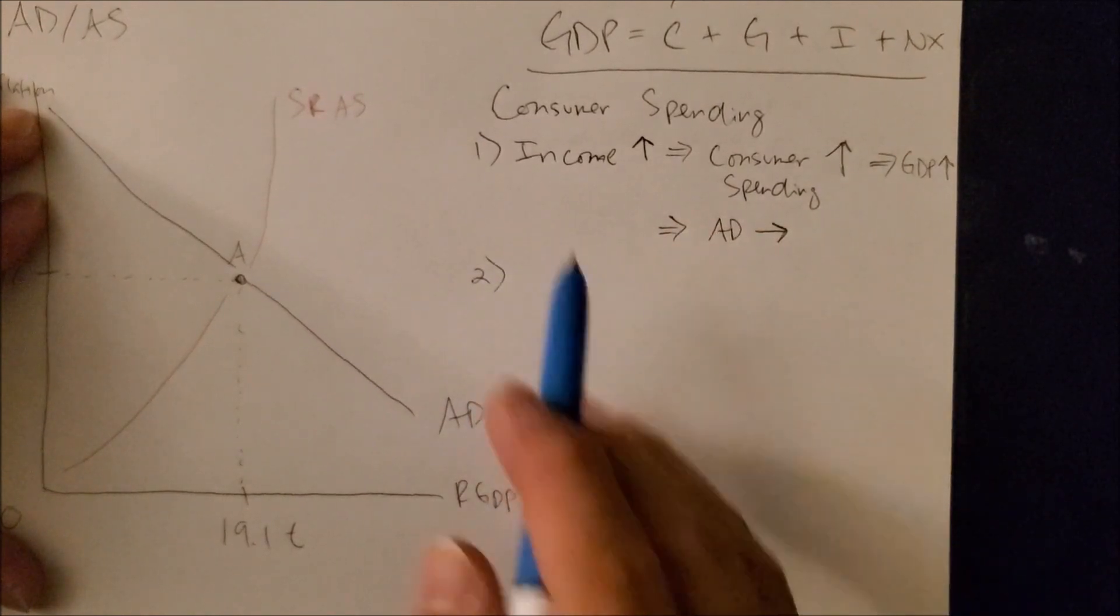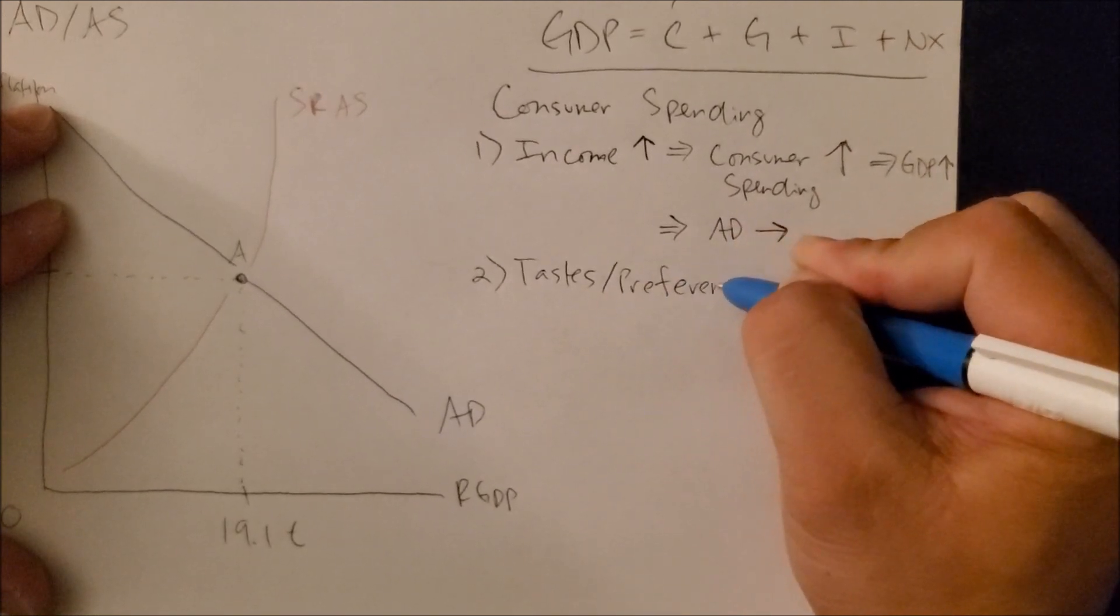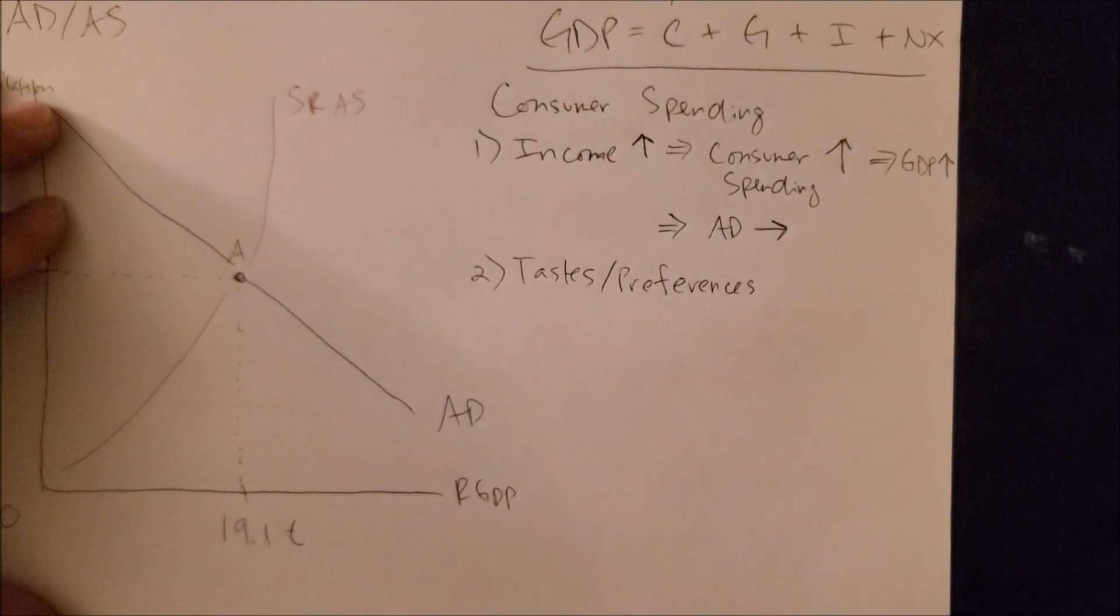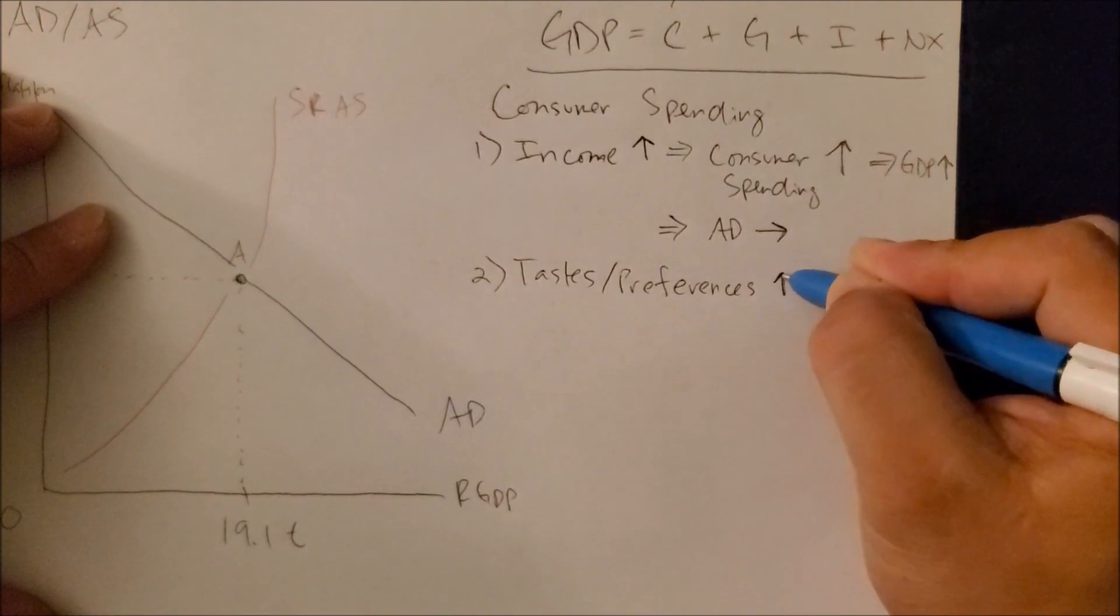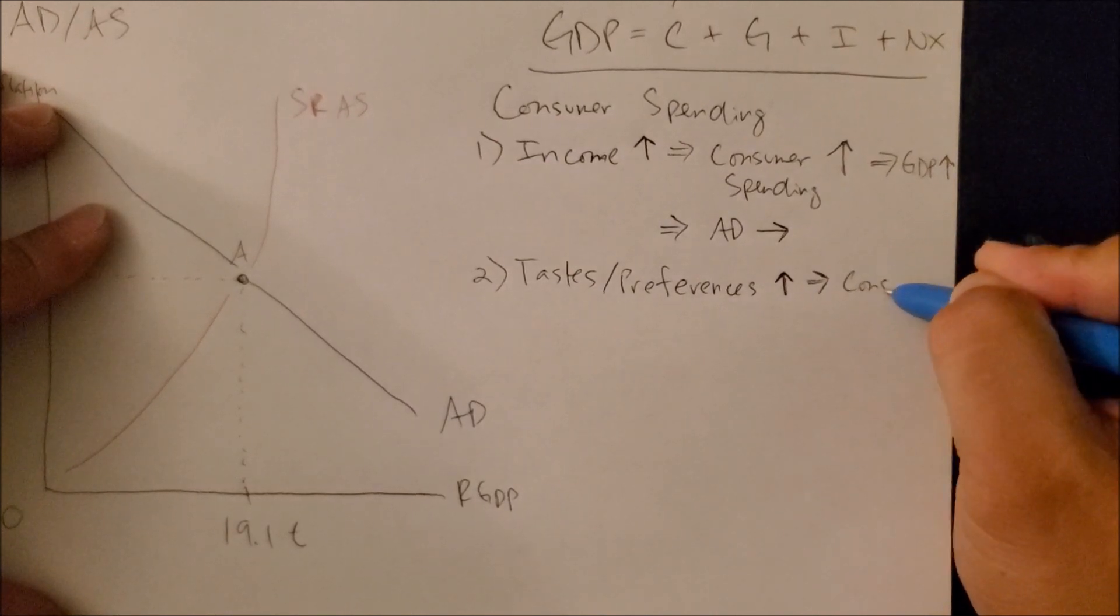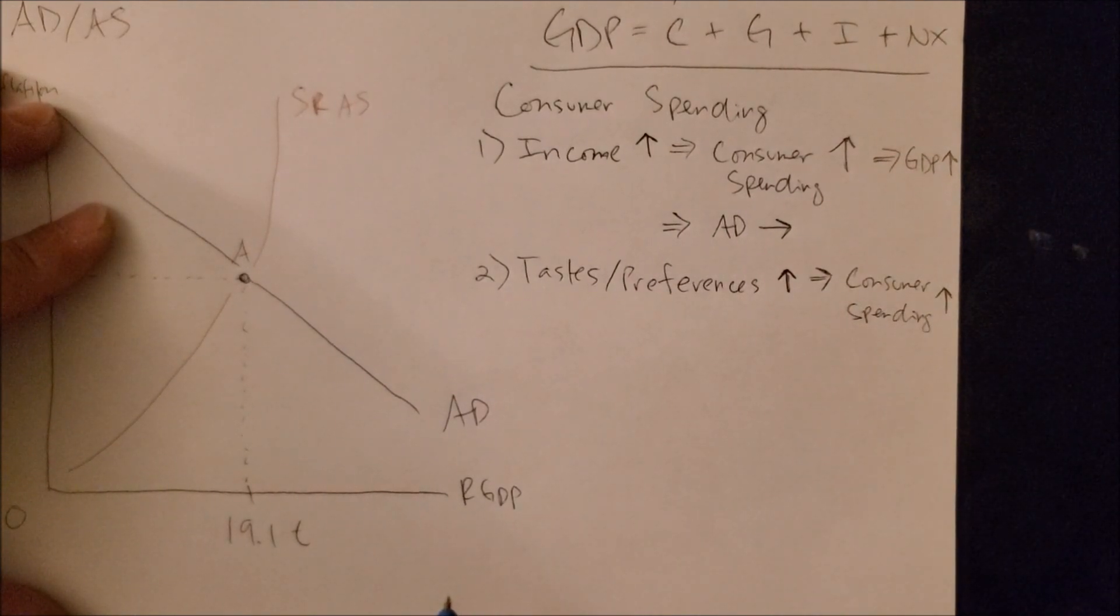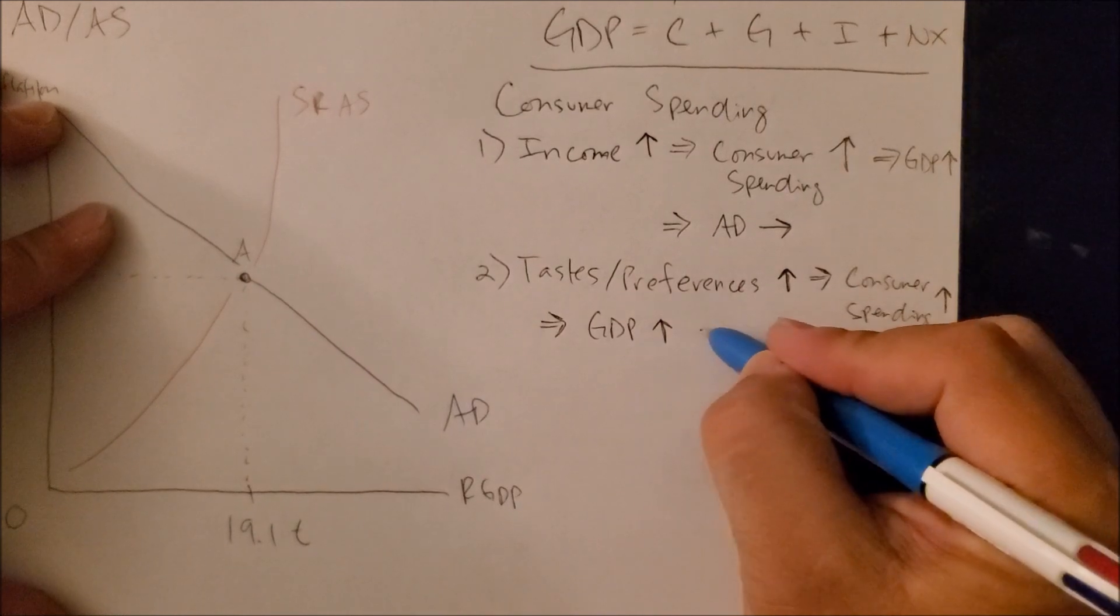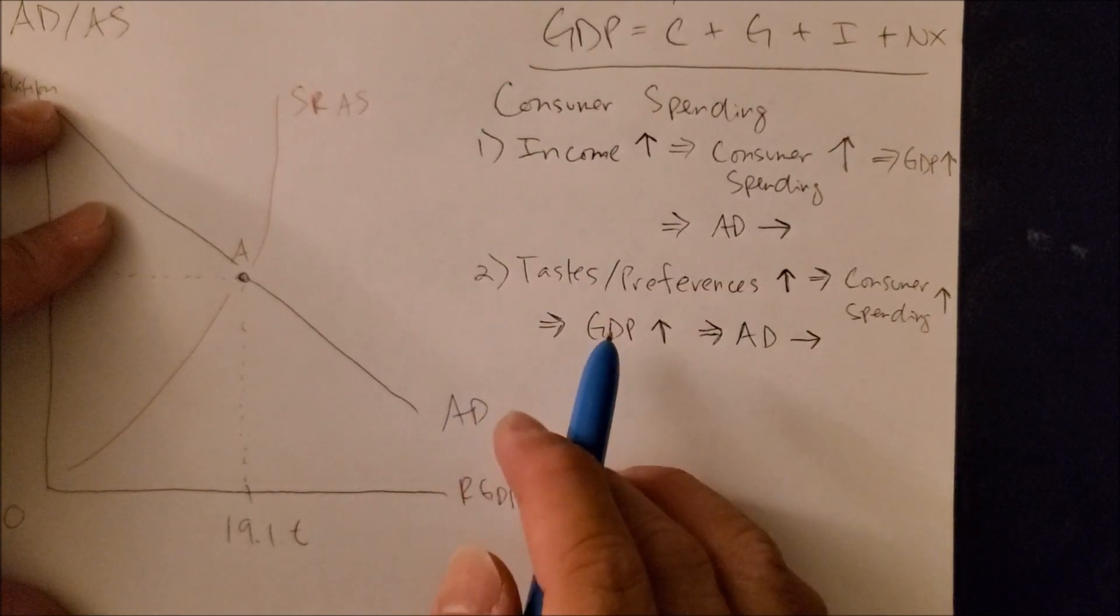A second factor in consumer spending looks at what we like, taste, and what we prefer, our preferences. So when you like something, you're bound to buy it. When you prefer one good over the other, you're more likely to consume that good. So again, when we see consumers' tastes and preferences increase for a certain good, we are going to consume more of that good. Hence, consumer spending confidence will also increase. This again would affect GDP and would shift AD to the right. All because of taste and preferences.